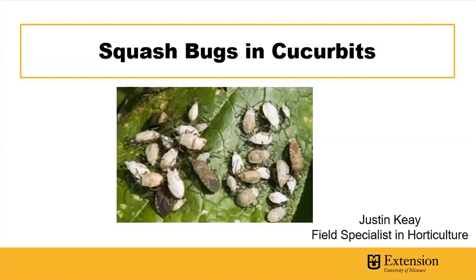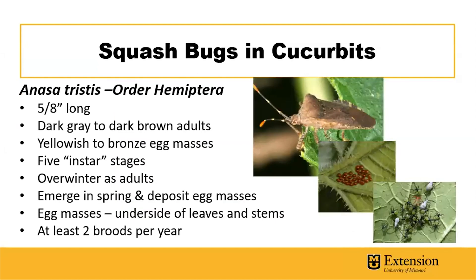The squash bug is what we call a true bug — it's in the order Hemiptera. They're a little bit over half an inch long and can vary in coloration from dark gray to dark brown. Their eggs are characteristically laid on the underside of leaves, and they go through a number of nymph stages called instar stages. These adults are capable of overwintering in our climates and come out in the springtime to mate and deposit their egg masses on the undersides of leaves.